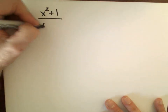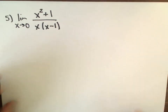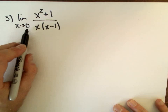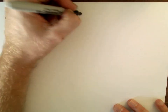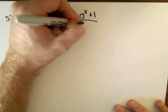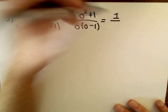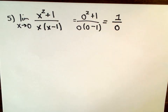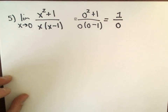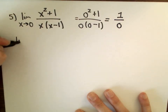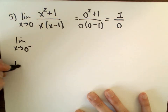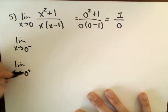Let's look at number five: the limit as x approaches zero of (x² + 1) over x times (x minus 1). This one has a different flavor. If we substitute x equals zero, the numerator gives zero squared plus one, which is one. The denominator gives zero times (zero minus one), which is zero times negative one, which is zero. So we have one over zero — there's a good chance this limit is positive infinity, negative infinity, or does not exist. For a limit to exist, the left-hand limit and the right-hand limit must equal the same thing.